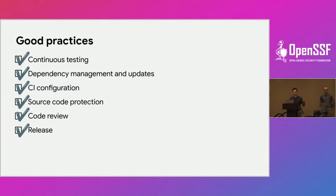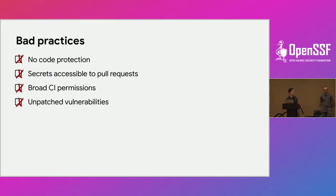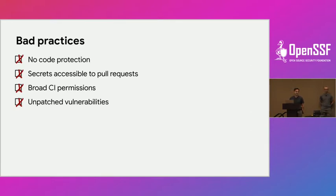Scorecard also looks at web configuration settings, like whether they're authenticated. Not just good practices — even bad practices. For example, do you have a bus factor of one? Is the project maintained by only one developer? If so, there's a higher risk that if something happens to that developer, no one will maintain the project. It also checks whether your secrets are accessible to pull requests and how an attacker can circumvent your permissions and bypass code reviews.